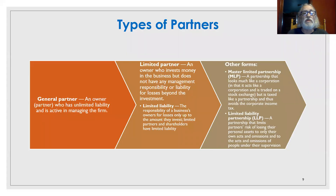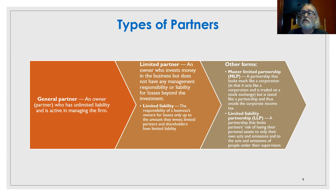Here are the types of partners. You can see on the left the general partners. The biggest downside is that you have unlimited liability — that means if something goes wrong, if you get sued, your personal property and everything you own, all your assets are at risk if you should lose in a court case. The limited partner does invest some money but doesn't have any management responsibility, and they don't have any liability either.